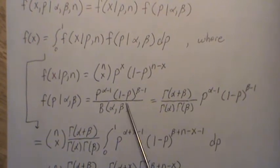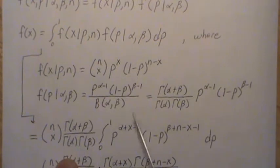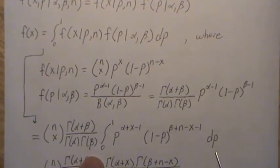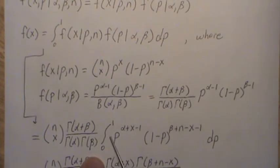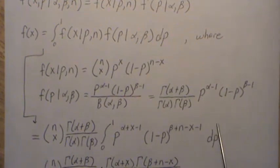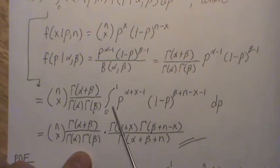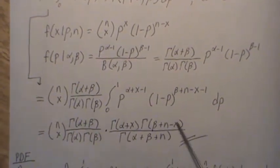Plugging in what we know, we take the constants out front and integrate. The remaining integrand looks like another beta distribution, so if we have the right normalizing constant it should integrate to 1. We multiply by the constant and its reciprocal — which is multiplying by 1 — so it integrates to 1 and we obtain the result. This is the beta binomial distribution.